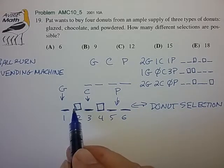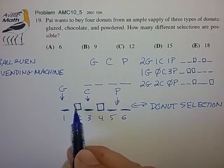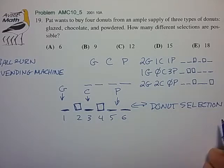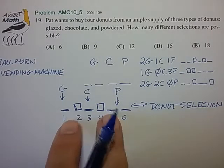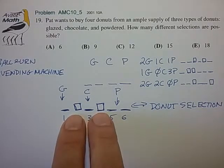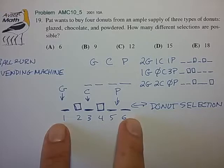And for any possible combination of separator locations, that will correspond to one doughnut selection that we see up on the table here. So the problem basically comes down to how many different ways can we arrange these two separators among these six positions?